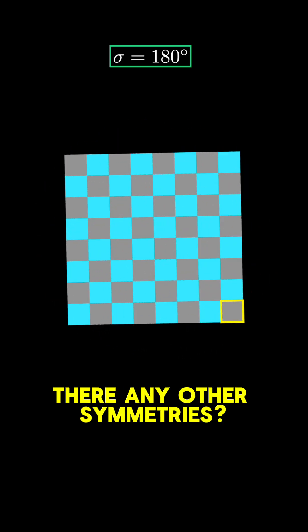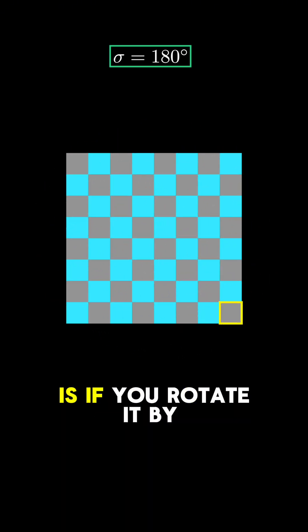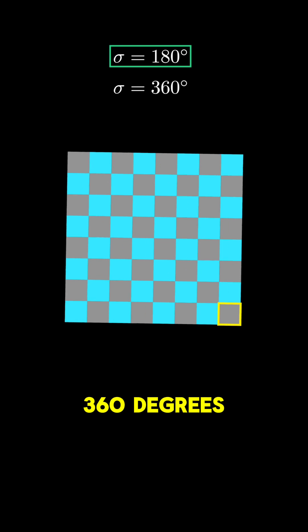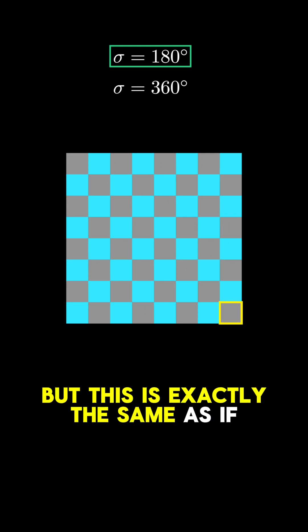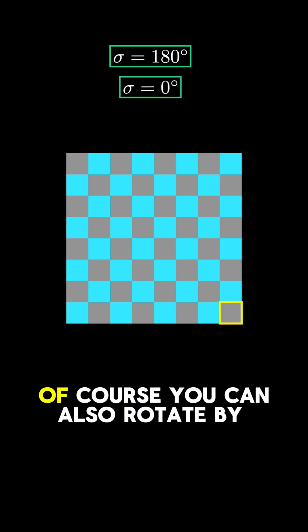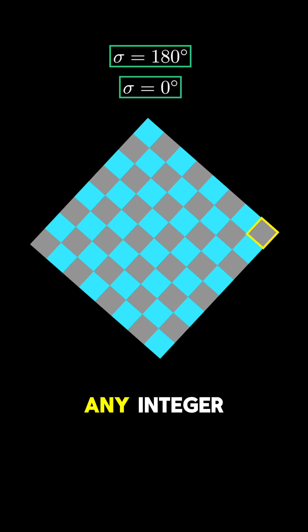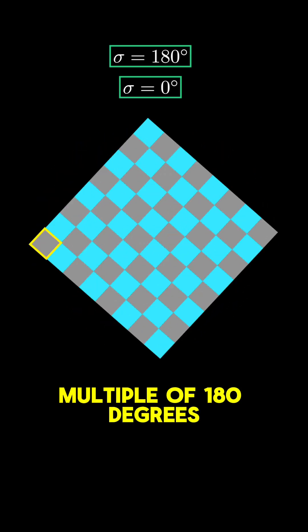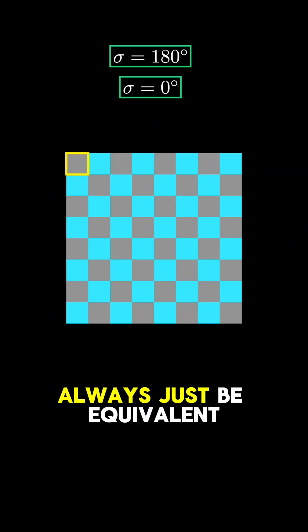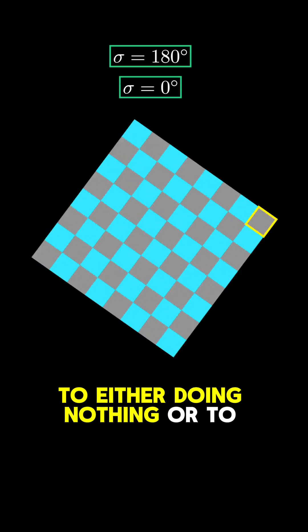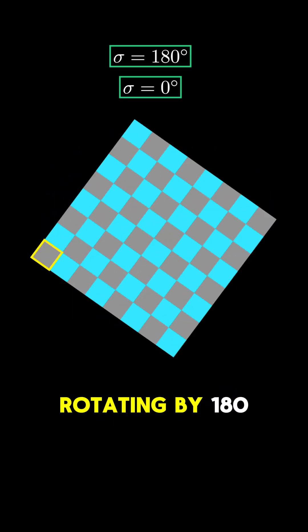Are there any other symmetries? The only other symmetry is if you rotate it by 360 degrees. But this is exactly the same as if you did nothing. Of course, you can also rotate by any integer multiple of 180 degrees. But any of these rotations will always just be equivalent to either doing nothing, or to rotating by 180.